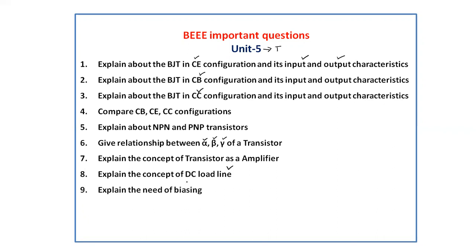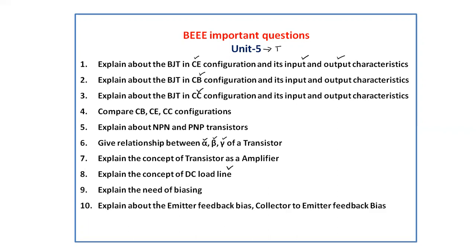Explain the need for biasing. Then explain the biasing circuits: emitter feedback bias, collector-to-emitter feedback bias, fixed bias, and voltage divider bias. They will ask any one of these. For whichever is asked, explain what the biasing circuit is, its purpose, and whether a stable operating point is obtained using that biasing circuit.